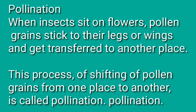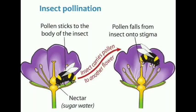Now moving on with pollination. When insects sit on flowers, pollen grains stick to their legs or wings and get transferred to another place. This process of shifting of pollen grains from one place to another is called pollination. We have already studied about pollination in the video where we discussed flowers and fruits. Here there is a picture which clearly depicts the process of pollination — when the insect sits on a flower, pollen sticks to its body, and when the same insect flies and sits on another flower, the pollen grains reach the stigma and bring about pollination.